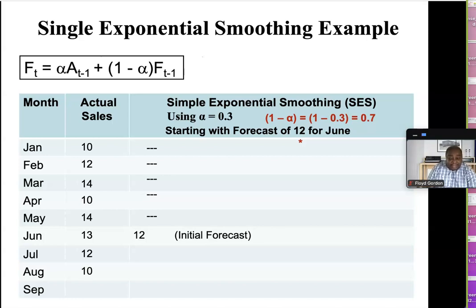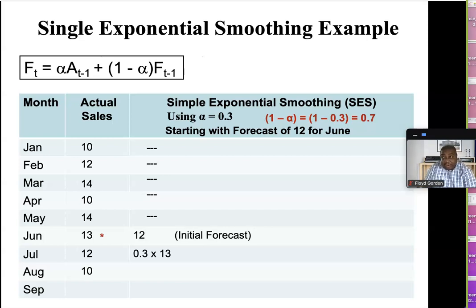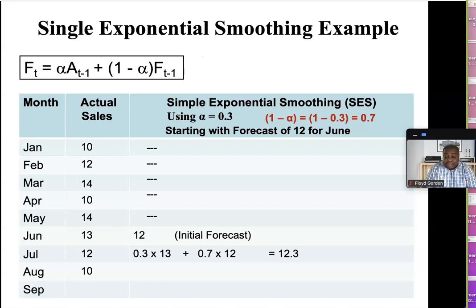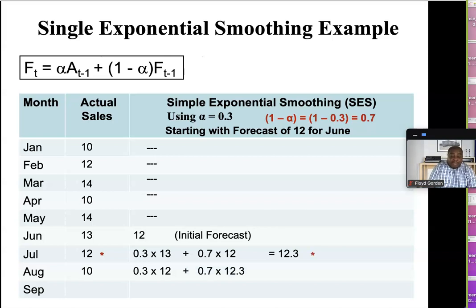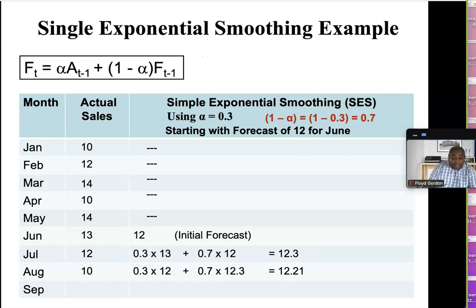For July: 0.3 times the previous actual 13, plus 0.7 times the previous forecast 12 — that works out to 12.30. For August: 0.3 times the previous actual 12, plus 0.7 times 12.30, works out to 12.21. Remember, I'm working with two decimal places. Last but not least, September: 0.3 times 10 plus 0.7 times 12.21 gives you 11.55.